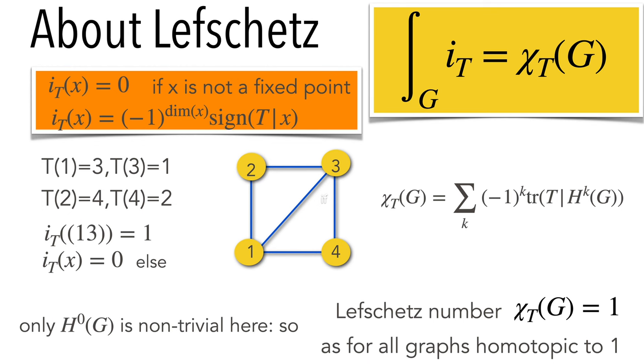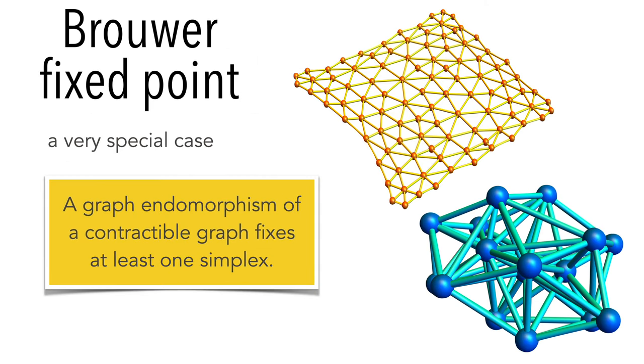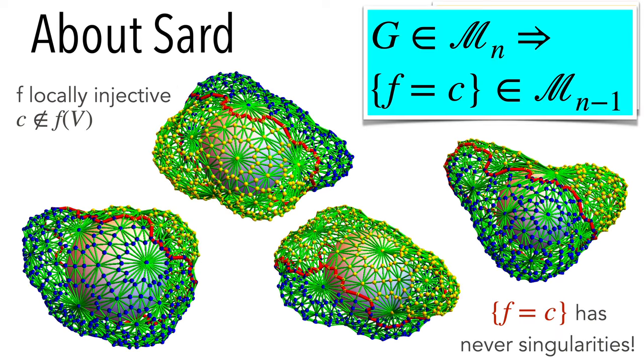The Lefschetz fixed point theorem is also a simple result, but it looks and is like the classical theorem. The sum of the indices of the fixed points equals the Lefschetz number, which is the super trace of the induced map on homologies. Here's an example of a graph which is contractible. When the graph is contractible, the Lefschetz number is 1, so there always exists a fixed simplex. That's the Brouwer fixed point theorem.